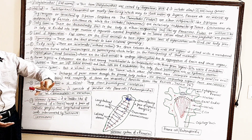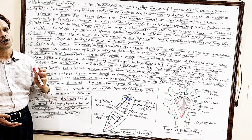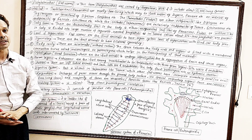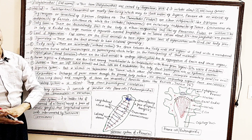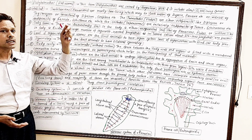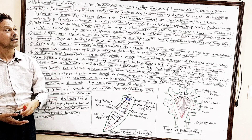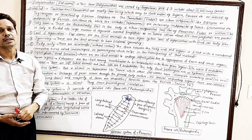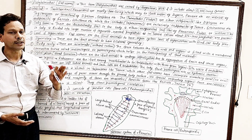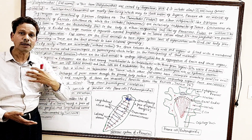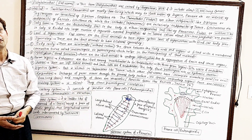In today's lecture, we will discuss the biodiversity and general characters of Phylum Platyhelminthes. First of all, we will discuss habitat. These platyhelminthes are grouped in three categories. The first is Turbellaria, the planarians, which are commonly found in free habitats — these are free-living forms.